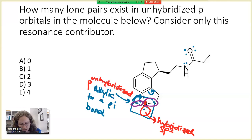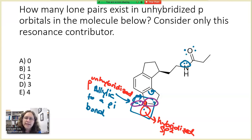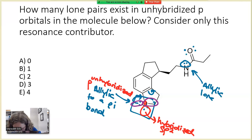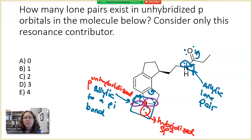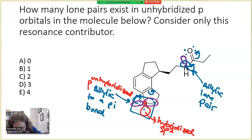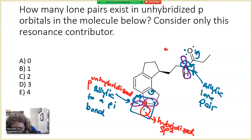Next, let's look at the lone pair on the nitrogen atom. It's really important to recognize that this nitrogen is an amide, meaning it's adjacent to a pi bond — so this is another example of an allylic lone pair that can participate in resonance. We can draw the resonance and push the electron density up onto the oxygen. Because that lone pair can participate in resonance, it must be in one of those unhybridized p orbitals. If it were localized in a hybridized orbital, it couldn't participate in resonance. So we have another unhybridized p orbital here.